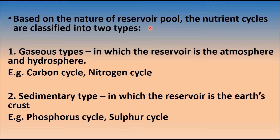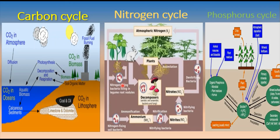The second classification is based on the nature of the reservoir pool. Nutrient cycles are classified into two types: gaseous type, in which the reservoir is the atmosphere and hydrosphere — examples include the carbon cycle and nitrogen cycle — and sedimentary type, in which the reservoir is the earth's crust — examples include the phosphorus cycle and sulfur cycle. All of these nutrient cycles will be discussed in detail in consecutive videos.